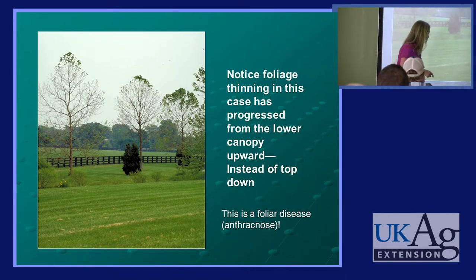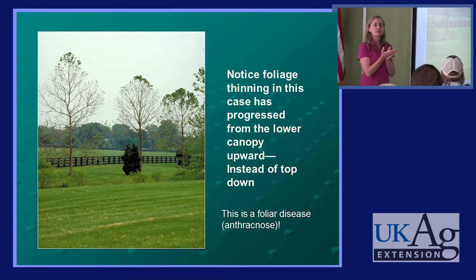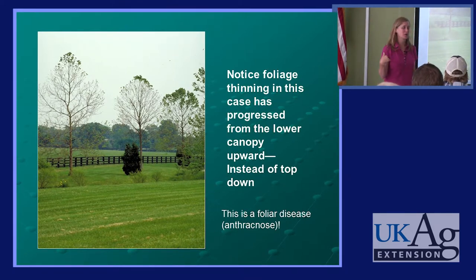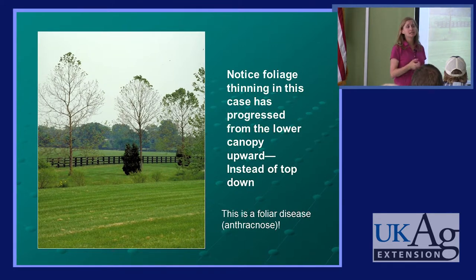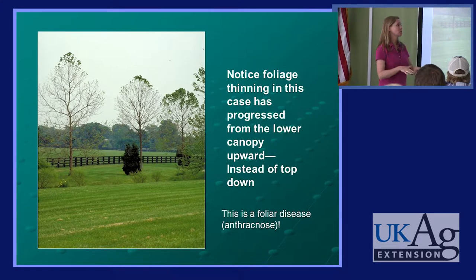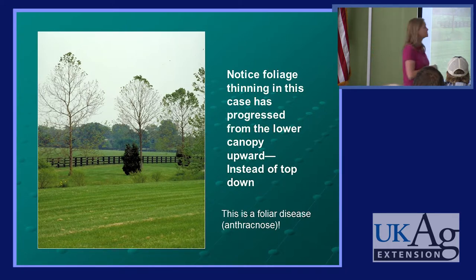The other thing about foliar diseases: we talked about looking very closely at little spots and blotches, but a lot of times what's really going to give you the best idea of what's going on in a landscape or nursery is not so much looking very closely — it's looking at the big picture. That's where I'm at a disadvantage in the laboratory; I'm depending on other people to give me the information I need. Thinning foliage that progresses from the lower canopy upward doesn't always mean it's a foliar or infectious disease, but often it does. Most of our foliar fungal diseases do progress upward.